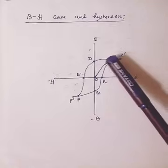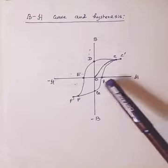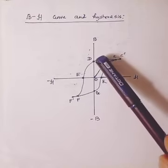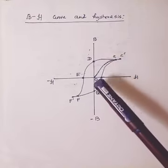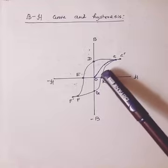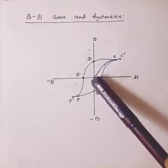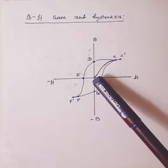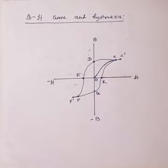Now if we do so you can see that though H is reduced to zero, B does not become zero. But if you can notice, when we started increasing H, B was zero when H was zero. So this is actually because of the residual magnetization.